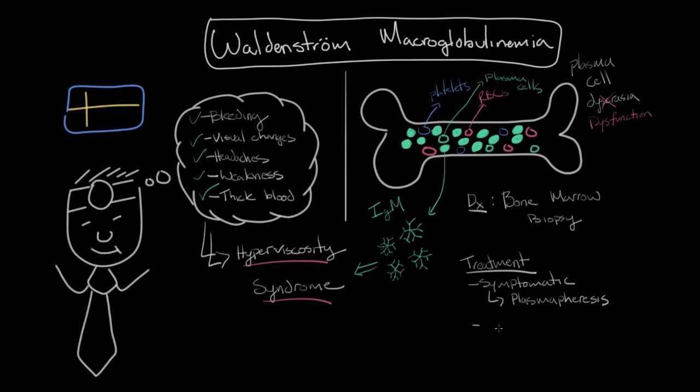So the other aim of treatment is to decrease the disease progression. Like I said, it can't be cured, but you can slow the disease progression. And this is accomplished with different regimens of chemotherapy.